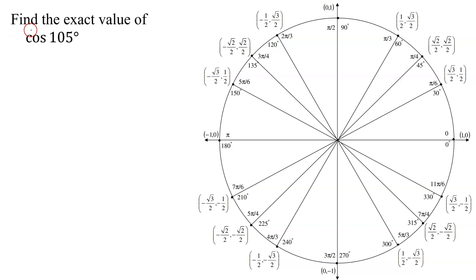In this example, I need to find the exact value of the cosine of 105 degrees. Since it says exact value, that means I cannot use my calculator because that will give me a decimal approximation.